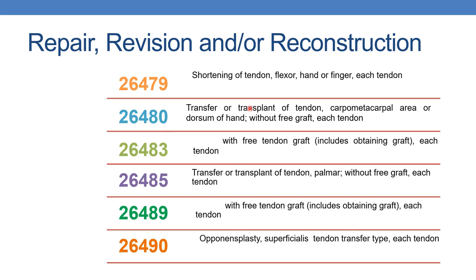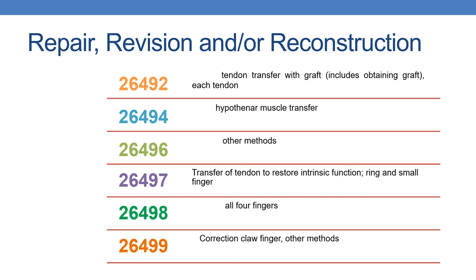The next is 26480: transfer or transplant of tendon, carpometacarpal area or dorsum of hand, without free graft. With free tendon graft it is reported with 26483. 26485 refers to transfer or transplant of tendon, palmar, without free graft. With free tendon graft it is reported with 26489. The next is 26490: opponensplasty, superficialis tendon transfer type, each tendon. 26492: opponensplasty, tendon transfer with graft. Next is 26494: opponensplasty, hypothenar muscle transfer. 26496: opponensplasty with other methods.